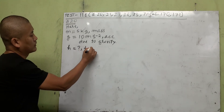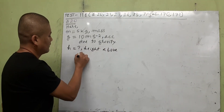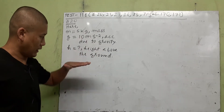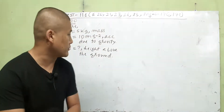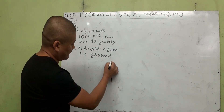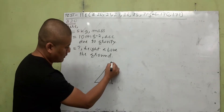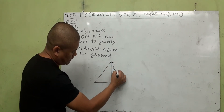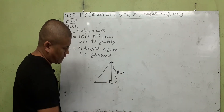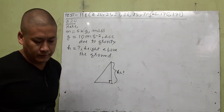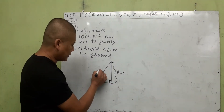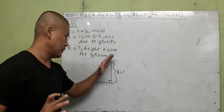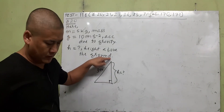h is the unknown: the height above ground level to which the person carries the block. Let us draw a representative figure. There is a vertical wall, and the ladder leans against it. The concrete block is carried up the ladder to height h above the ground, which is still unknown.